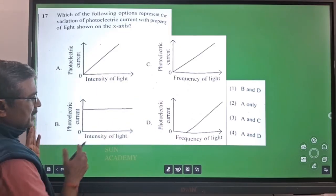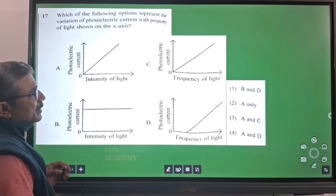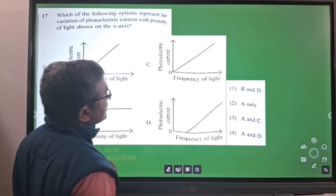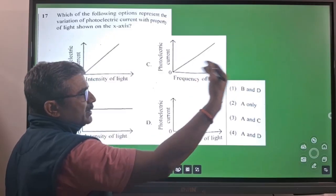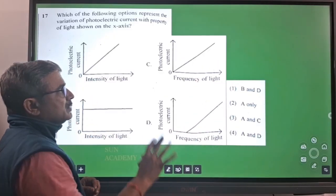B is wrong and come to frequency of light. If you increase the frequency of light you will increase the kinetic energy of the ejected electron but not the photocurrent.